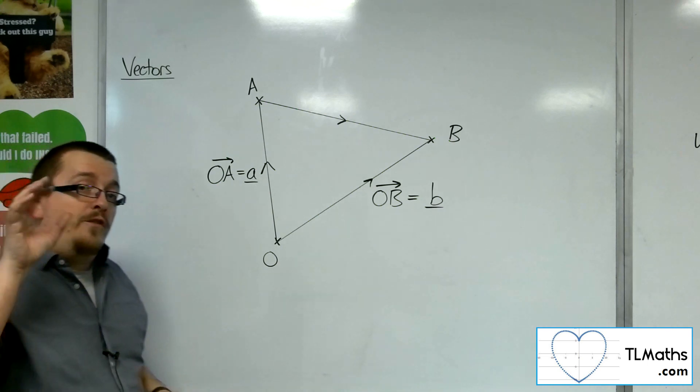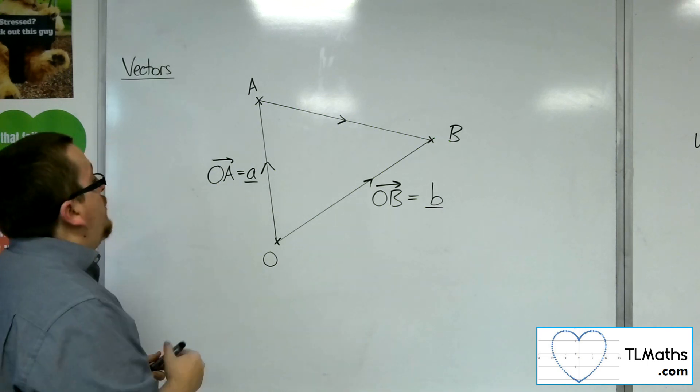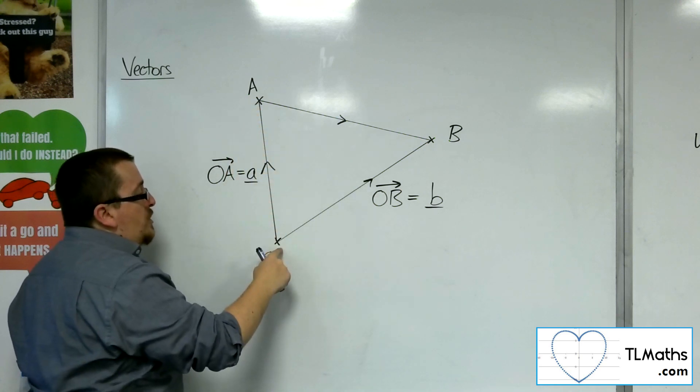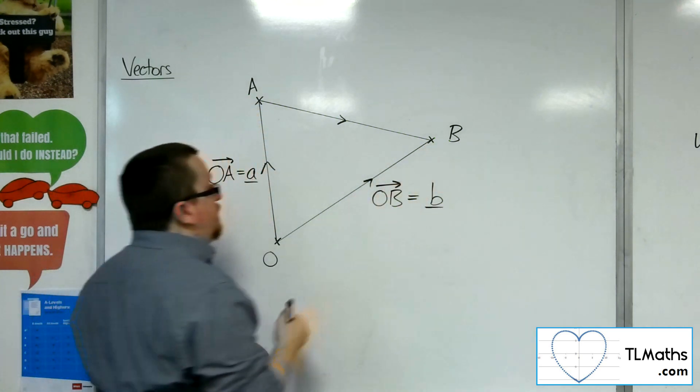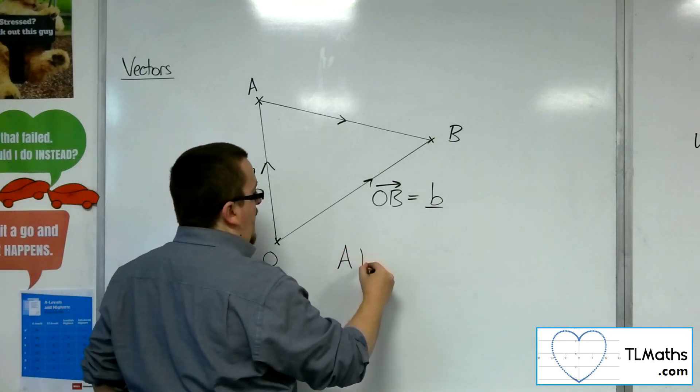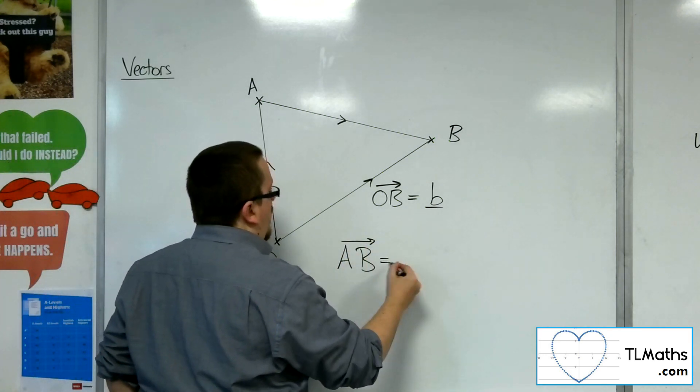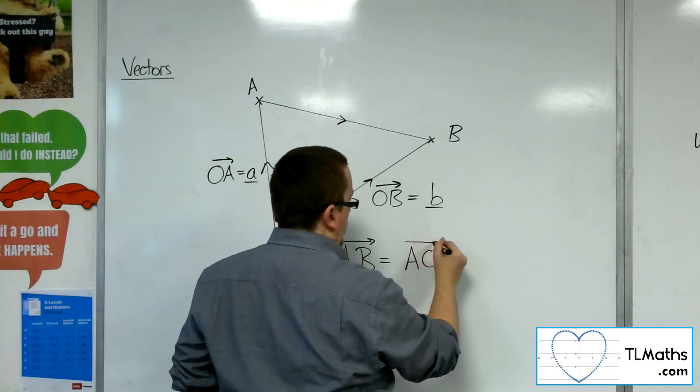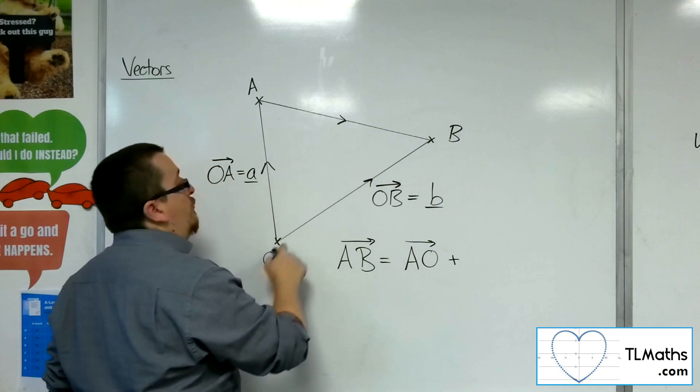Now you can't just walk there directly because you're going to walk through several buildings. So what you've got to do instead is you've got to go backtrack from A to O and then you've got to go from O to B. OK, so you would say to get from A to B, I need to go from A to O.